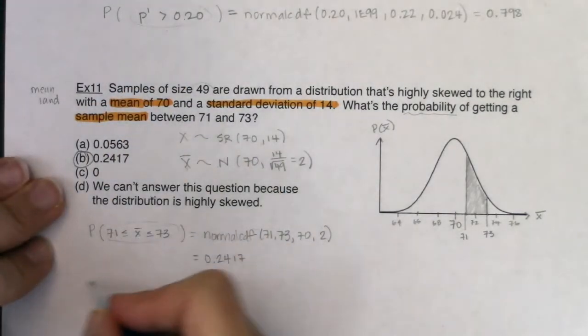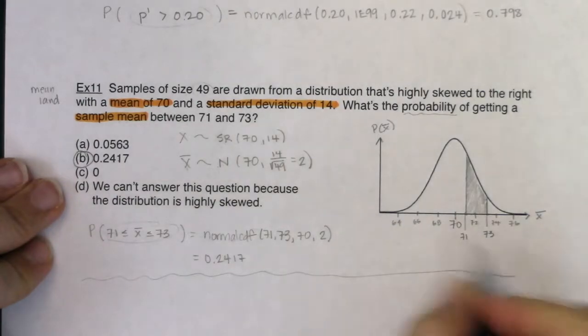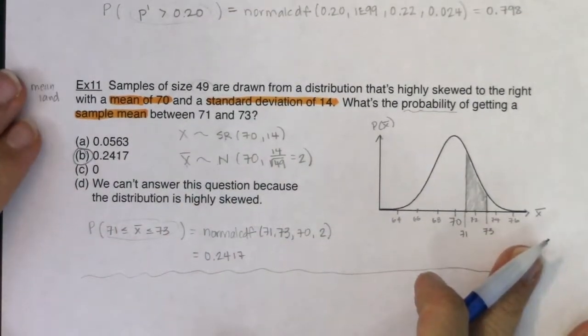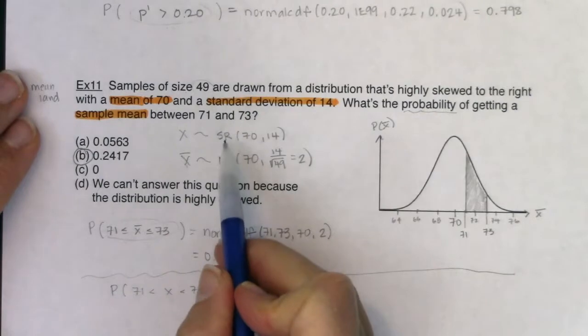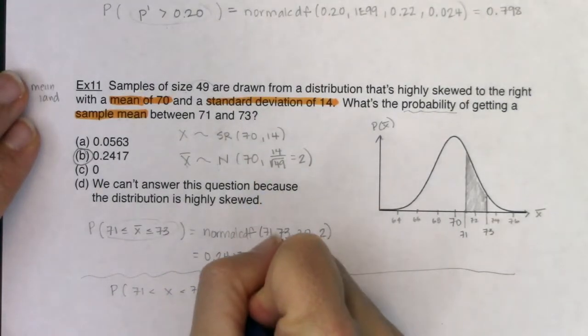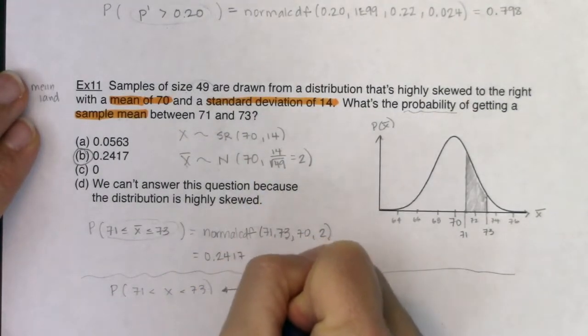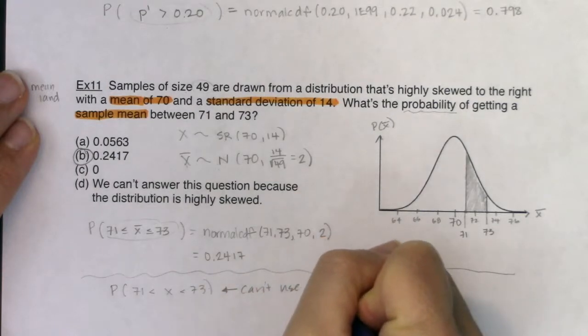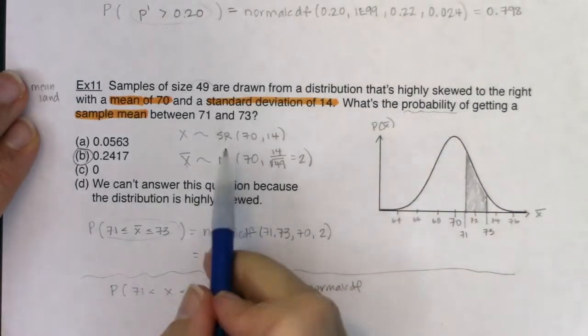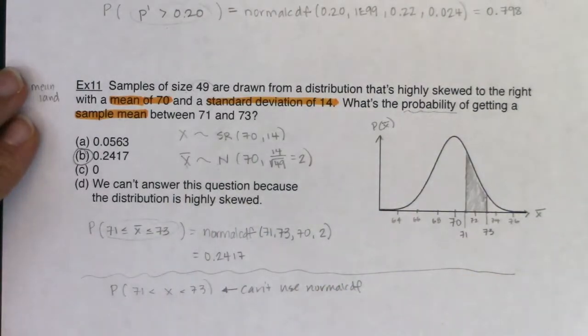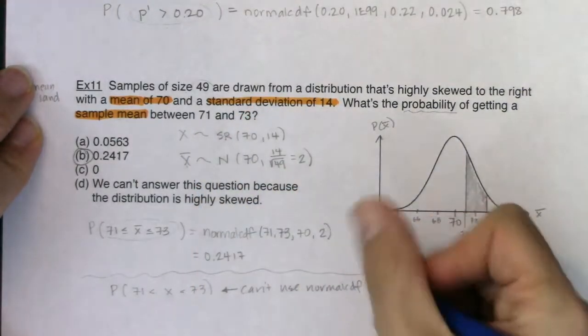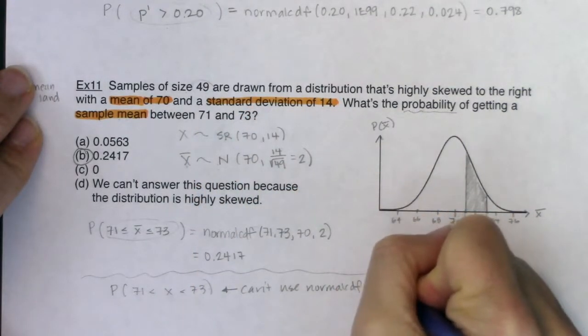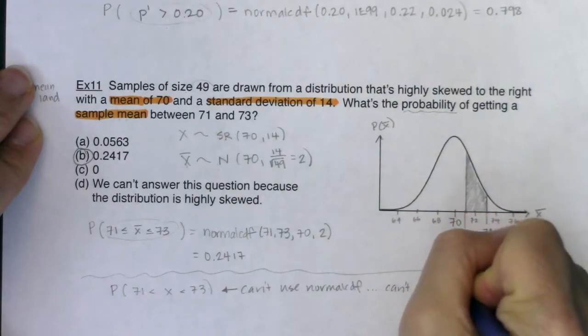And before we head out of here, this is just a bonus. This is not really the, obviously, this is not part of the multiple choice question. We answered it. If they had asked instead, what is the probability that x is between 71 and 73? We couldn't do it. Can't use normal CDF. And the reason we can't use normal CDF is because the population distribution was skewed right. It was specifically not normal, which is why we can't use normal CDF. So we would say we can't do this problem. Put a little sad face there.